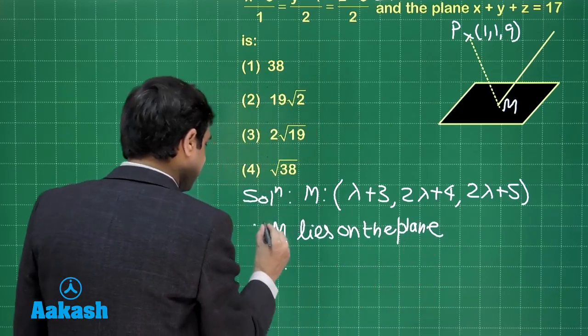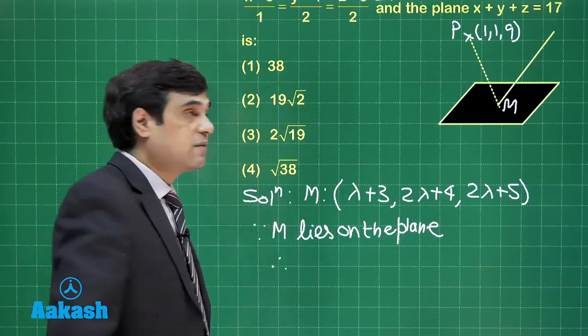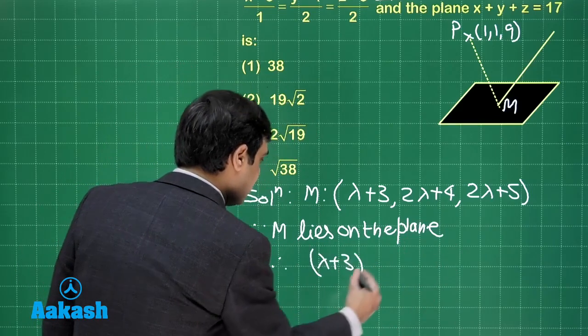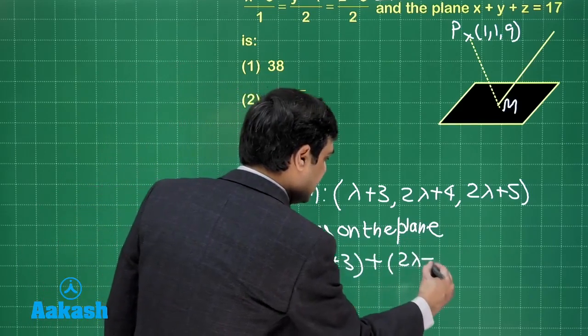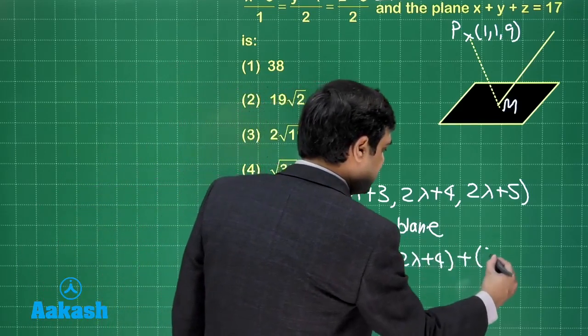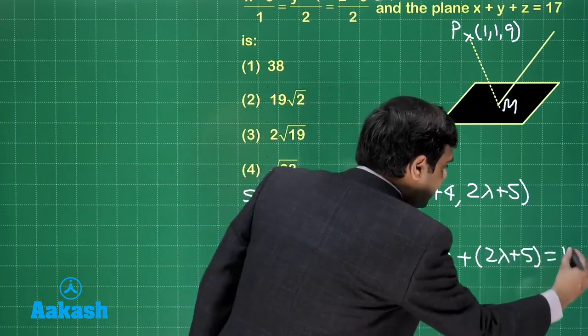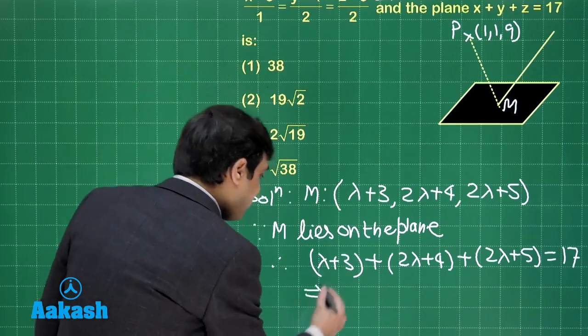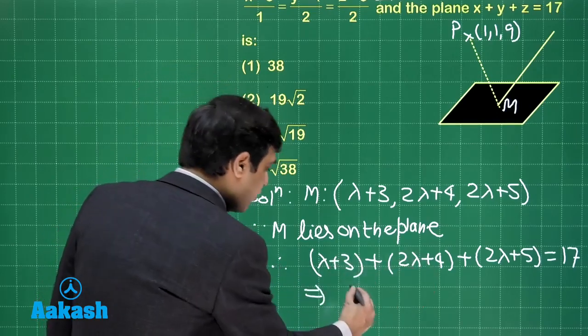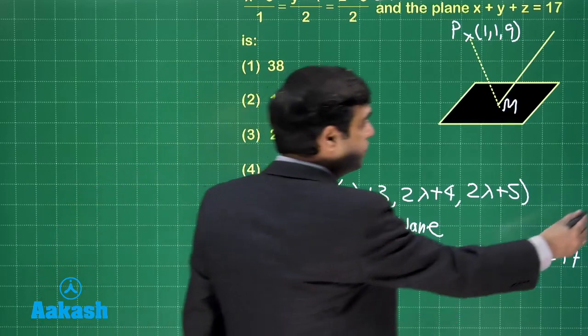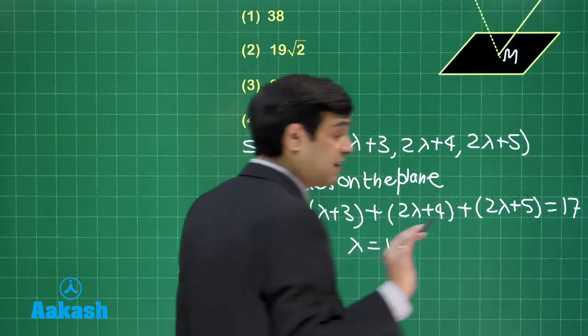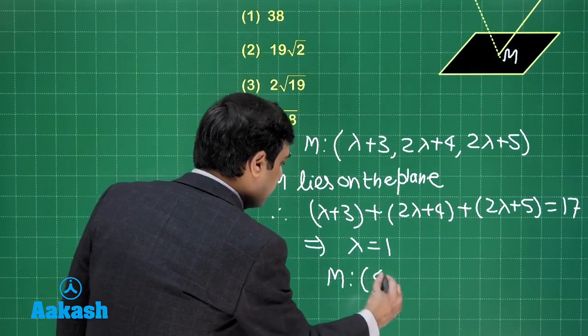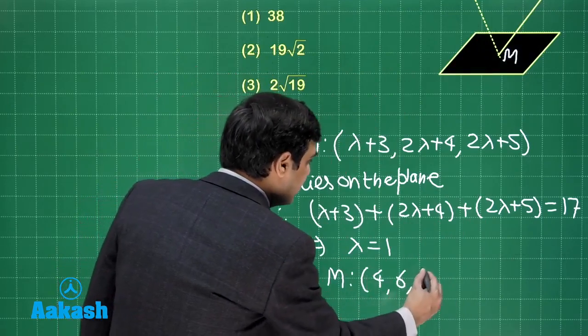Therefore, since M is lying on the plane, so just put this one in the equation of plane. This gives us lambda plus 3 plus 2 lambda plus 4 plus 2 lambda plus 5 is equal to 17, correct. Now just simplify - you observe 5 lambda is equal to 5, that is lambda equals 1. So we obtain the coordinates for the point M. So point M is obtained as (4, 6, 7).